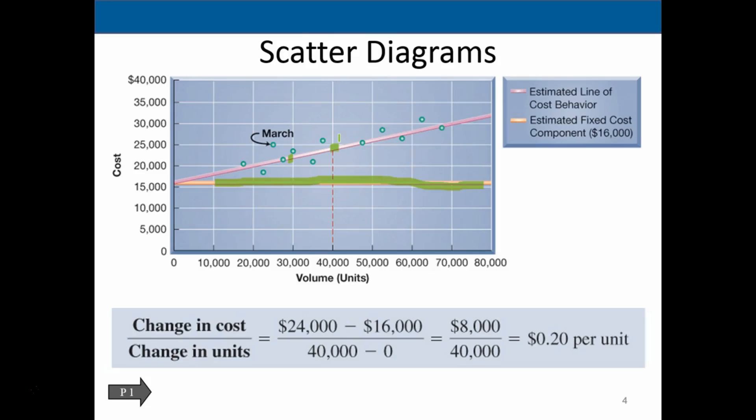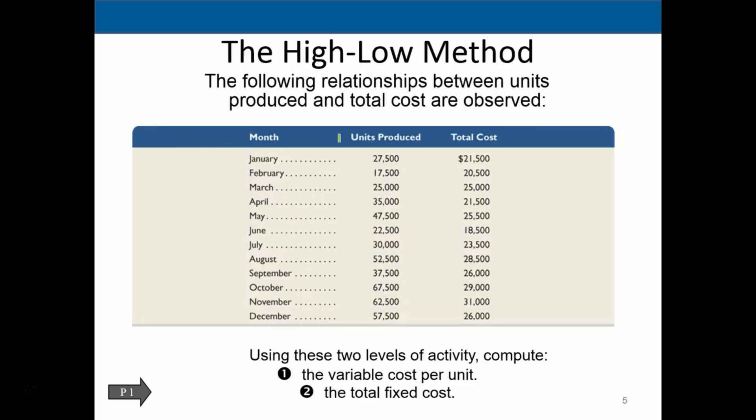And we will then get the slope from those extreme points. And then we will know the slope of the line, meaning we'll know what the variable costs are. Then using that data, we can figure out what the fixed costs are. So we're kind of backing into it in this way.